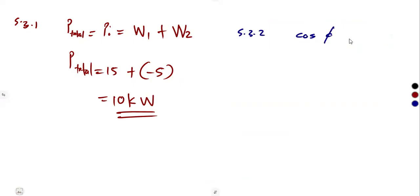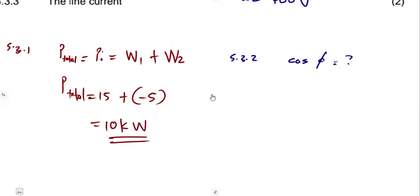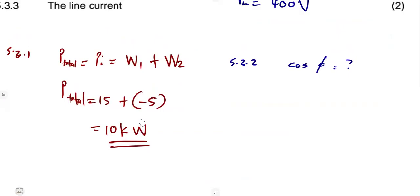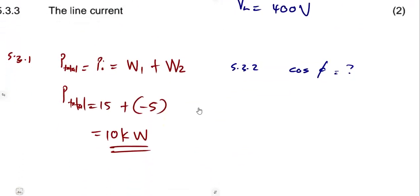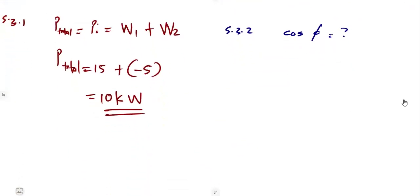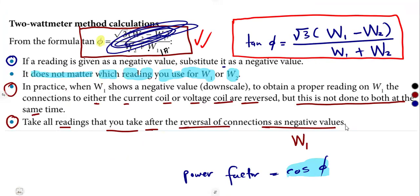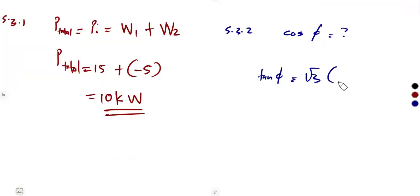So 5.3.2, our power factor. We do not know the value because we do not have the angle, but we have the sum of these two. Let us just go back to our formula. Remember that our tan φ is equal to the square root of three into W2 minus W1 over W2 plus W1. I'm going to stick to this formula.